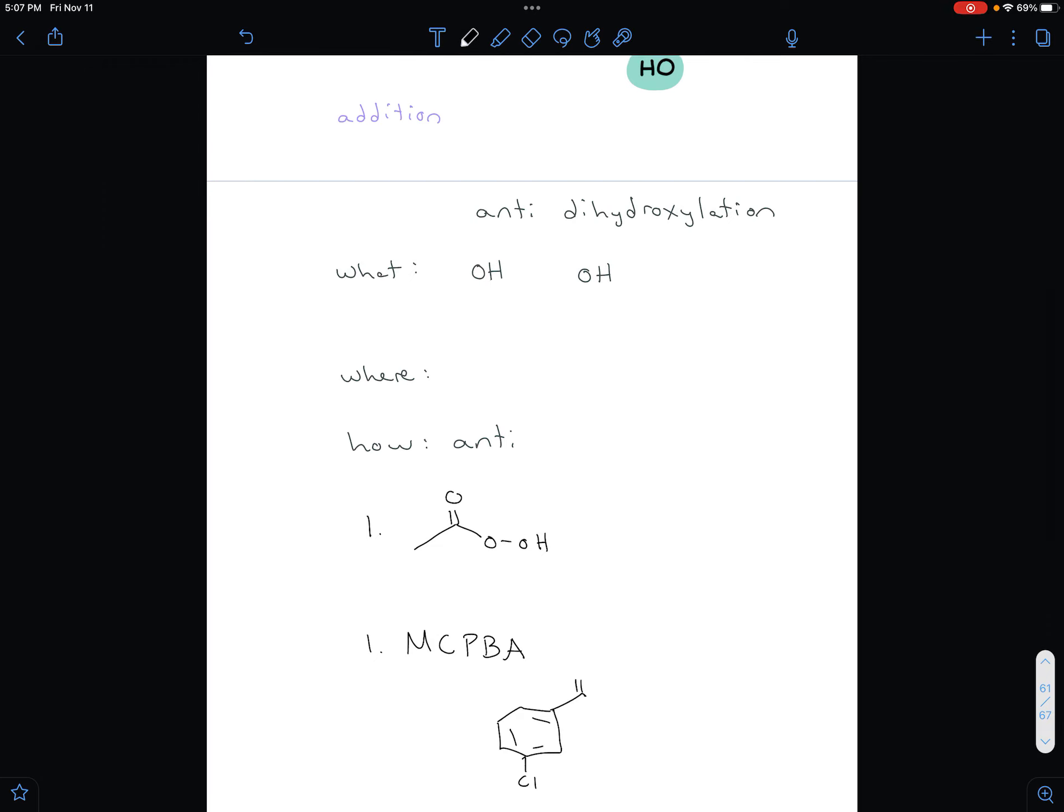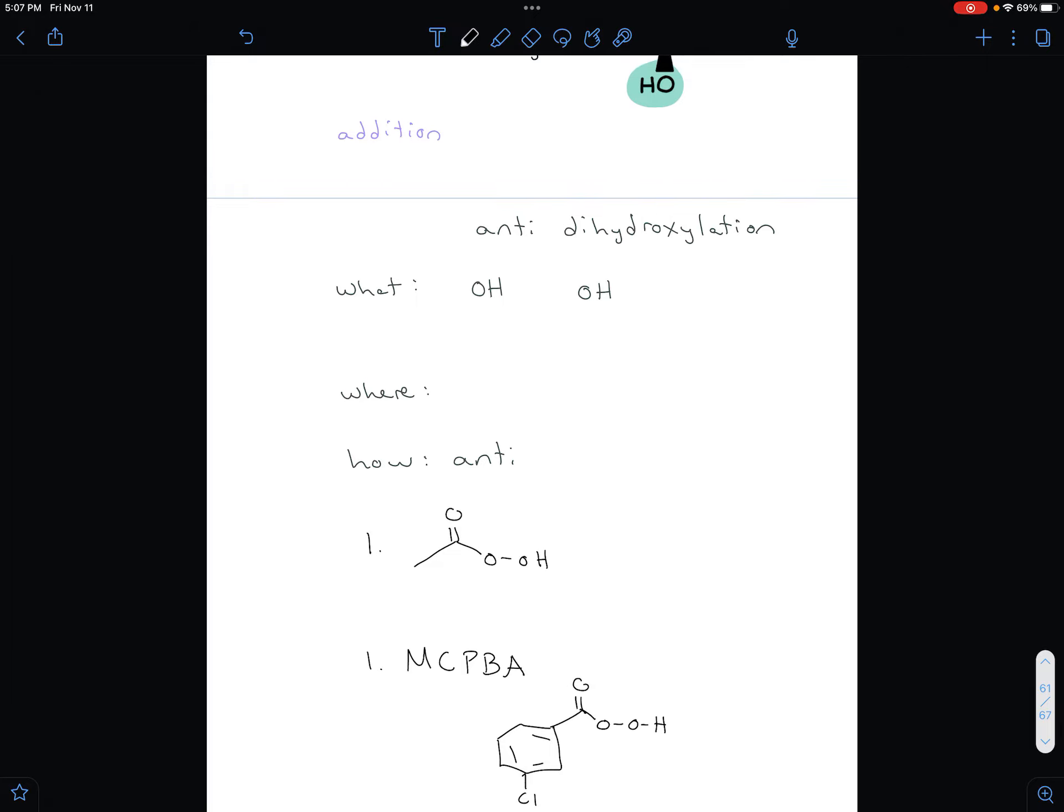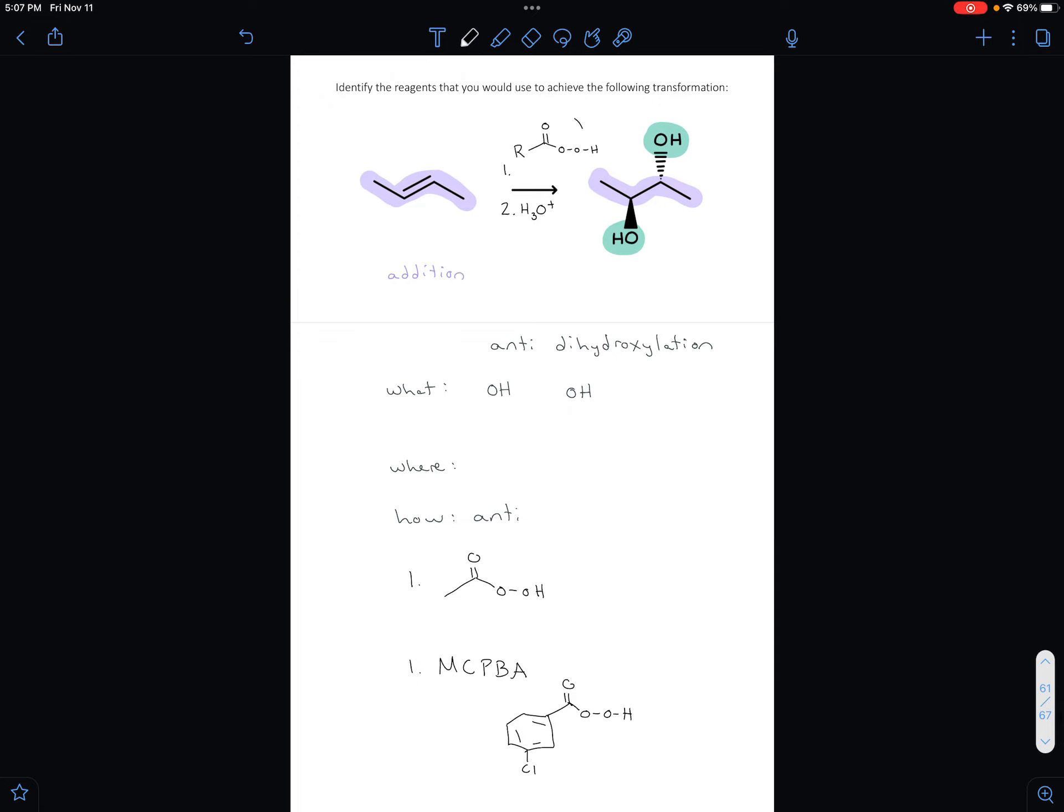It looks something like this, and you don't need to know the structure for this, but you should definitely know the abbreviation MCPBA—it's a peroxy acid. Any of those can show up in that first step.